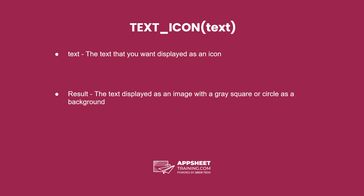The TEXT_ICON expression has one parameter: the text that you want displayed as an icon. The result is the text displayed as an image with a grey square or circle as a background.